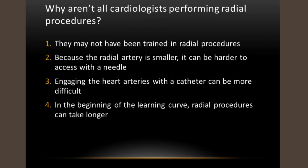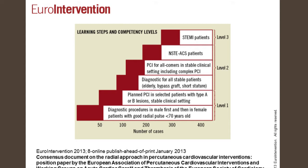The European Society published learning steps and competency levels. Level one would be diagnostic procedures in men first — since men usually have larger arteries — then in female patients, then planned stable PCI in patients with type A or B lesions, the simpler blockages. Level two would be older patients and shorter patients where catheter engagement is more difficult. Level three would be heart attack patients, because in that setting time is of the essence and you want a skilled operator — time is muscle.